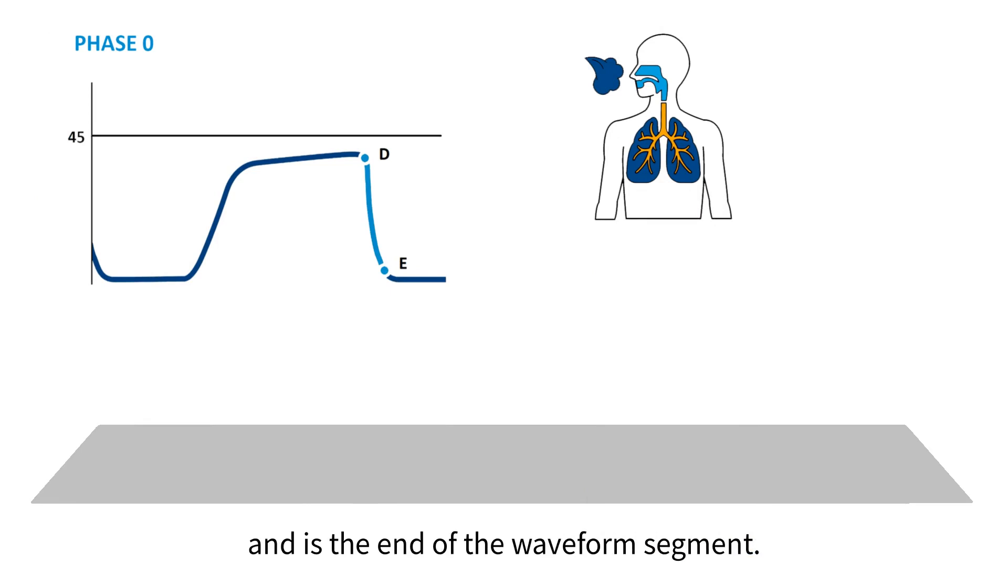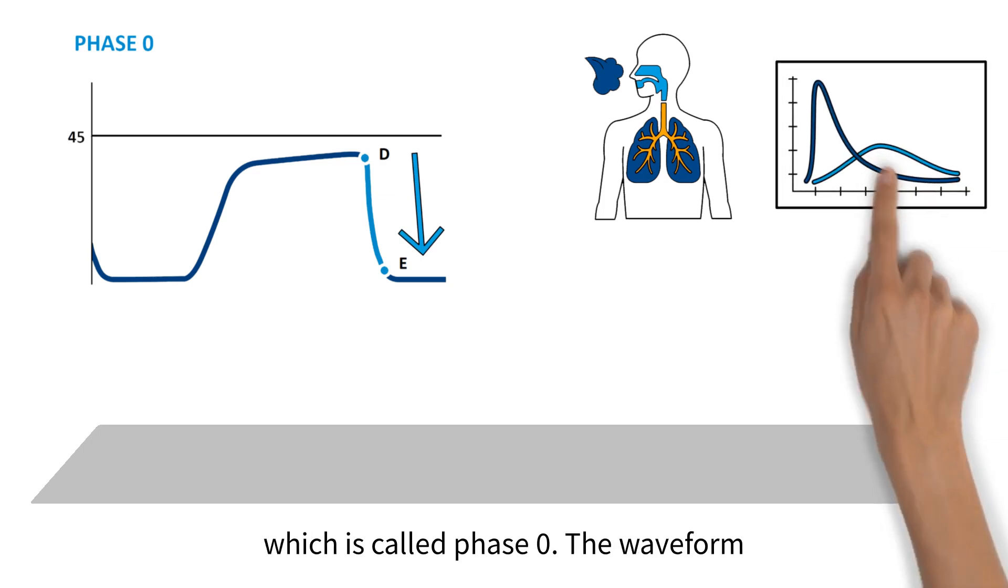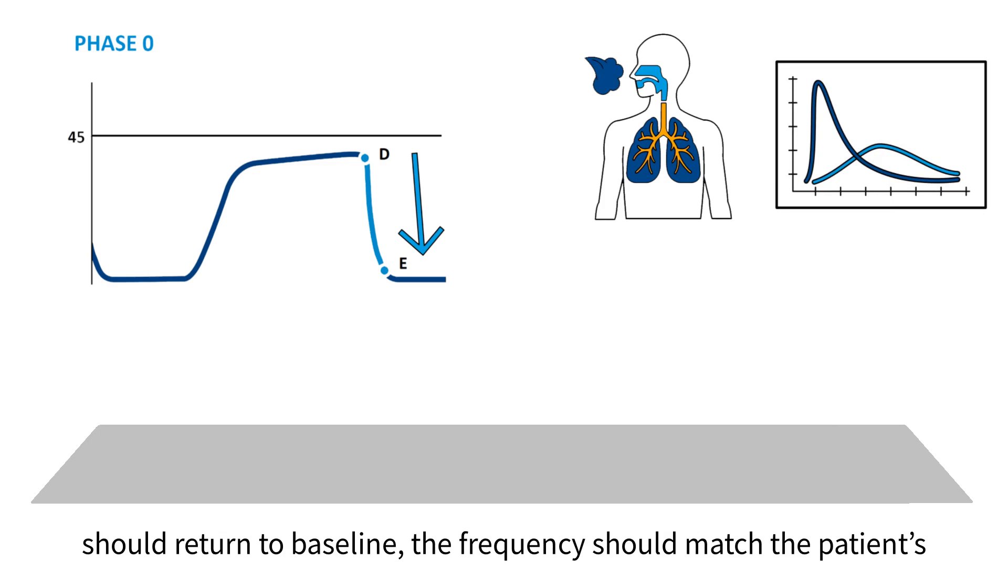Oxygen fills the airway and carbon dioxide levels quickly drop back to zero, returning to baseline, which is called phase zero. The waveform should return to baseline and the frequency should match the patient's respiratory rate.